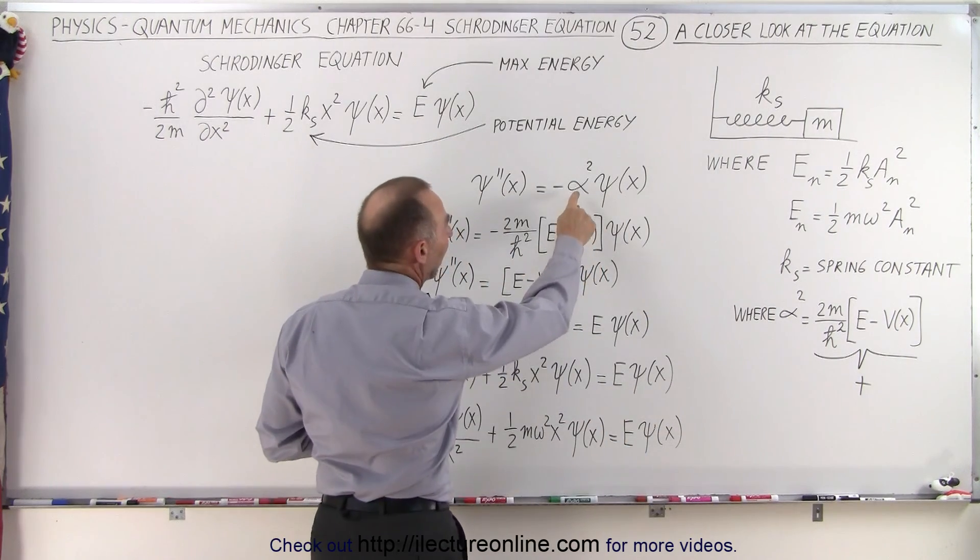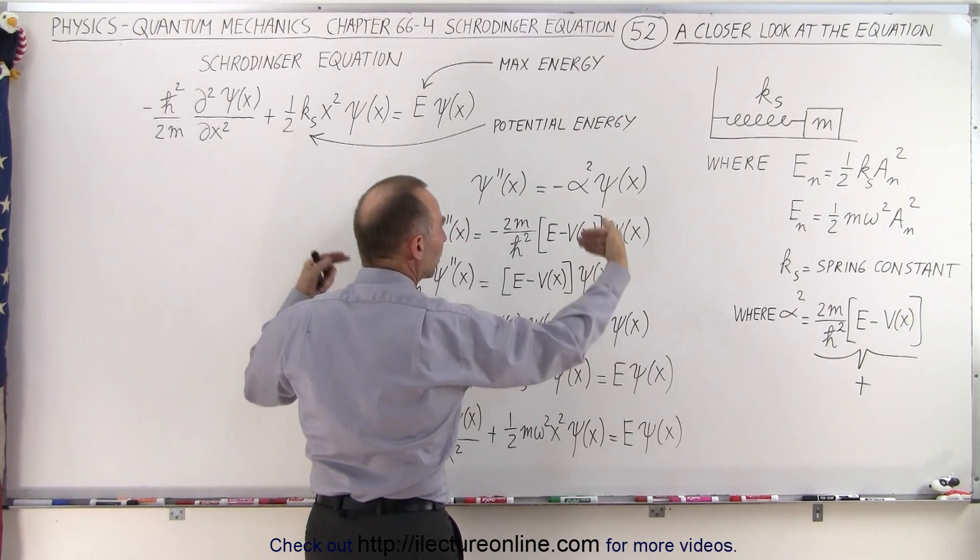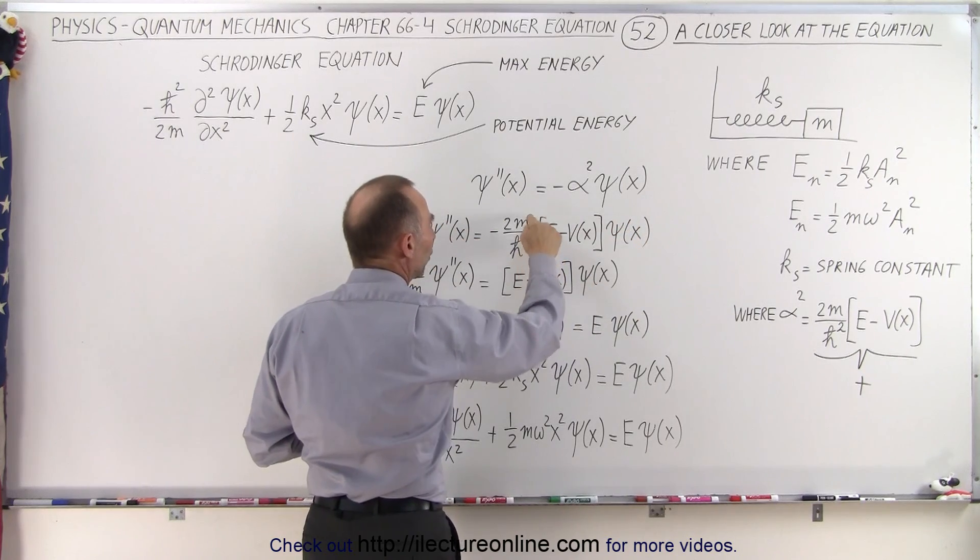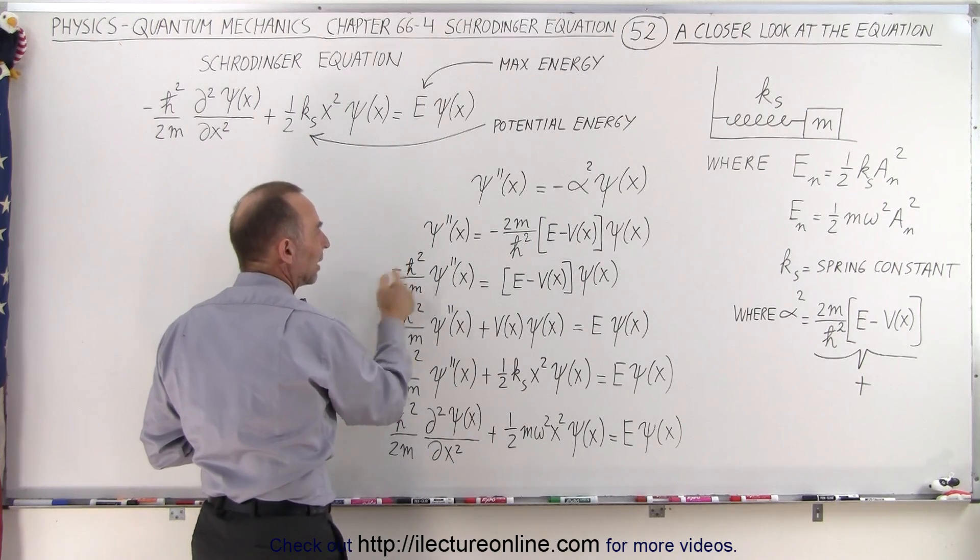Now when we replace the alpha squared by what's equal to, we see this here. Now we multiply both sides by h-bar squared over 2m to move this over to the left side. We still have the negative, we move that along.